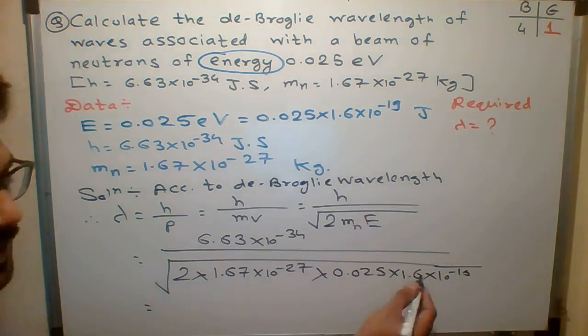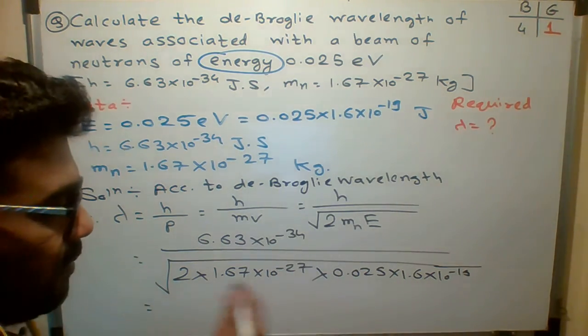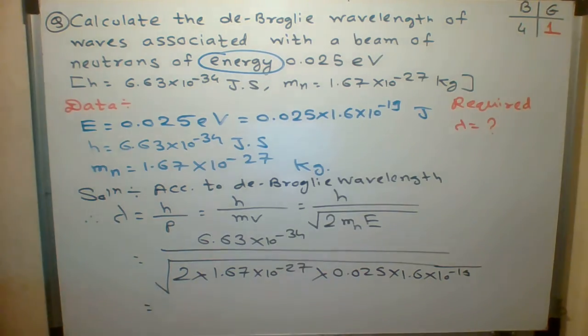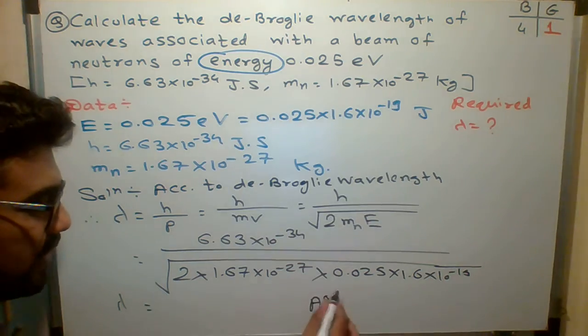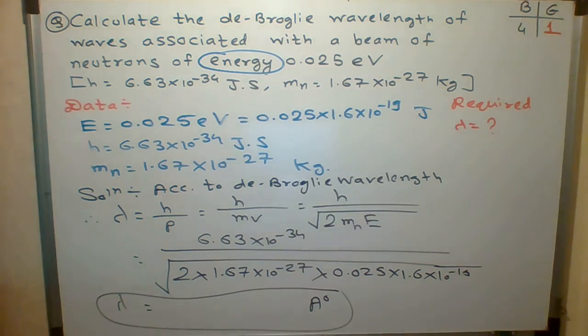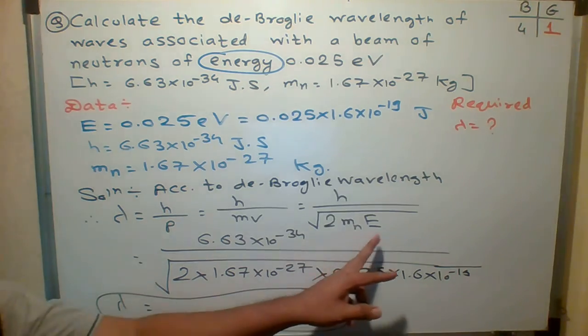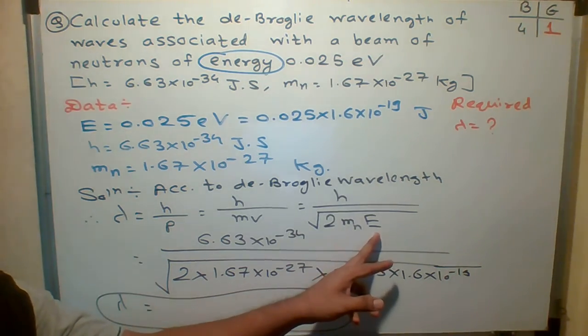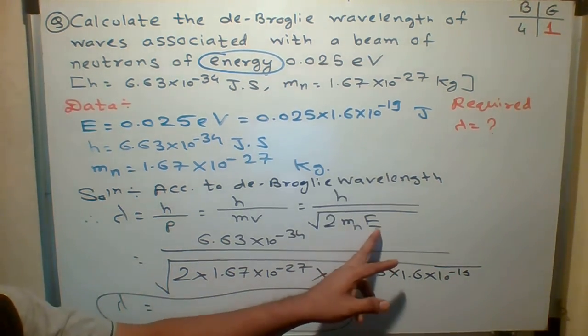Just simplify the denominator. Multiply and then find out the value, and tell me the answer of lambda in angstrom. Who will tell me the answer in angstrom? Quick. So only the thing is what? Here information given in terms of energy. So we kept energy as it is. Here information is not given in voltages.